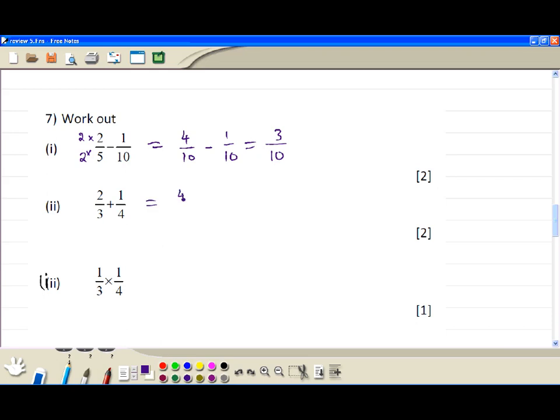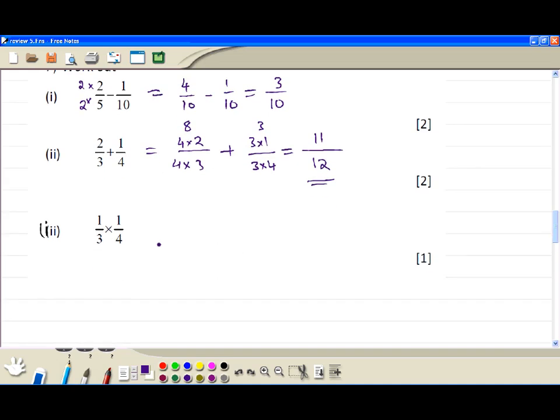Similarly here, we multiply the first fraction by 4, second fraction by 3. Now we have the same denominator. This gives you 8 plus 3, which gives you 11 over 12. For the last one, just multiply top with the top, bottom with the bottom, giving 1 over 20.